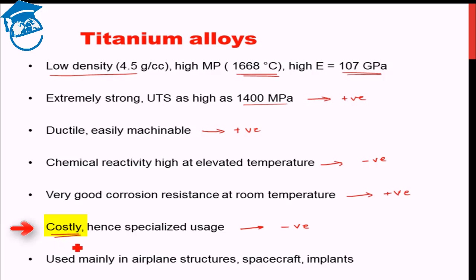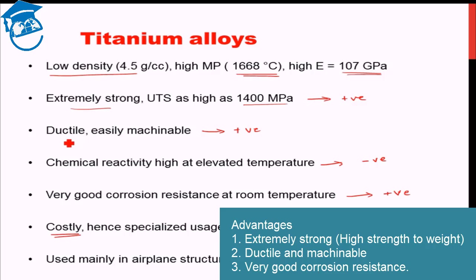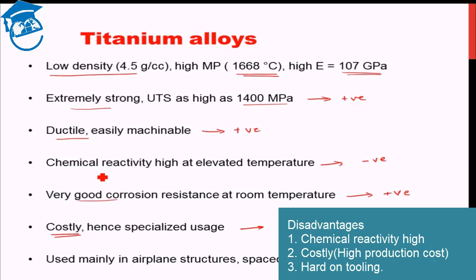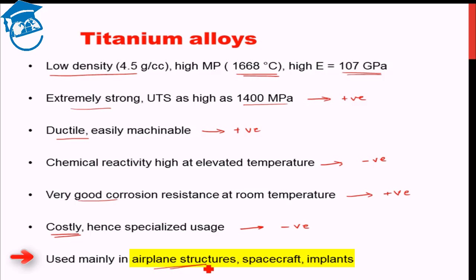Another main drawback of titanium alloys is that they are very costly. Therefore, titanium alloys are only used in specialized cases. The positives are: extremely strong, ductile and machinable, and very good corrosion resistance. The negatives are: high chemical reactivity at elevated temperature and high cost. Titanium alloys are mainly used in airplane structures, spacecraft, and body implants — all specialized applications.